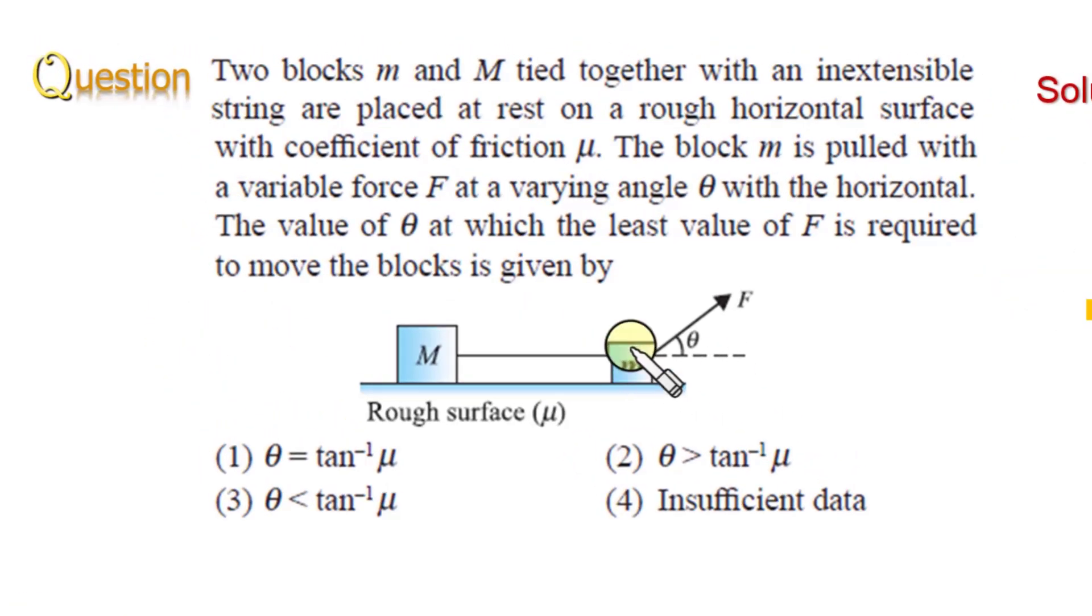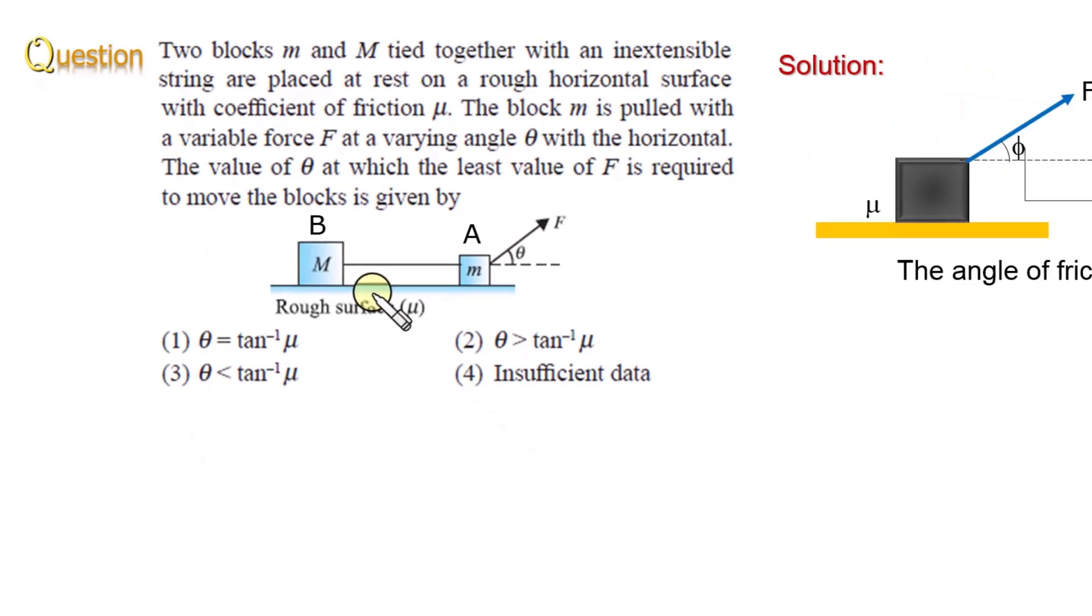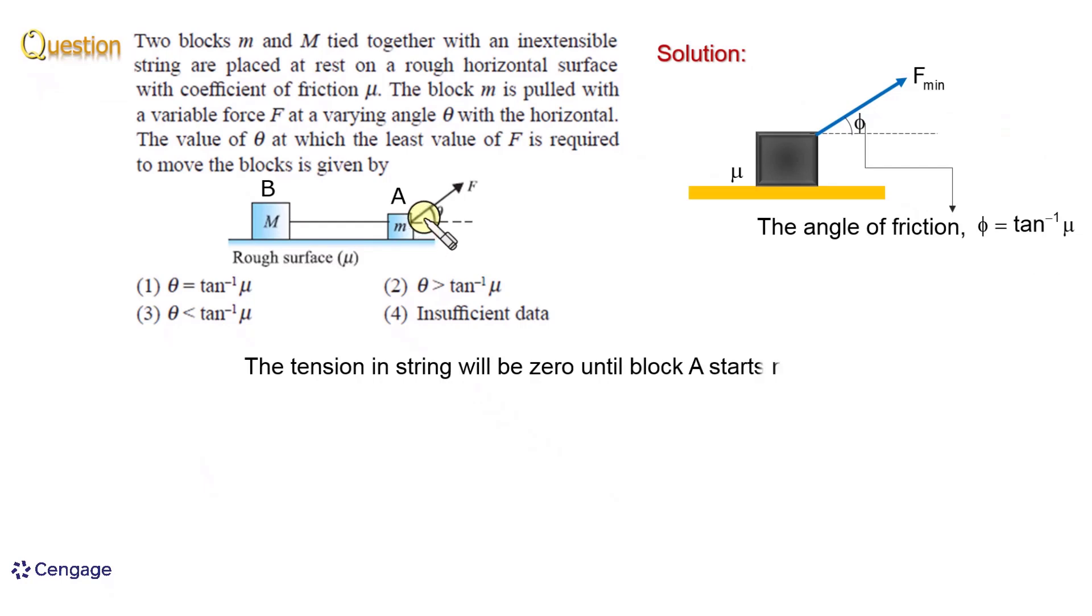Now, come to our situation. Suppose this is block A and this is block B. Force is acting on block A. The tension in the string will be zero until block A starts moving. For A to move with the least value of the force, this angle theta should be equal to the angle of friction.